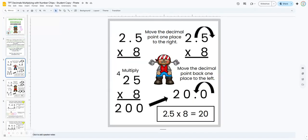The next two slides give an example of that. Here, they have one decimal point that they're moving one place to the right. They're going to multiply as if they were whole numbers, and then when they get their answer, they're going to move that decimal point back one place to the left.